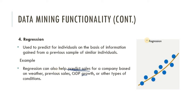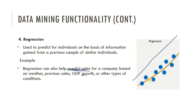In classification, if there are multiple data points, we divide the data points into classes. But in regression, we draw a line such that the maximum number of points lie on that line. That is the difference between regression and classification.